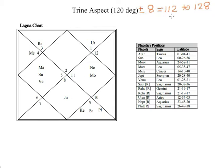Now let's see this with an example. Mercury is at 14 degrees and Jupiter is at 20 degrees. Let's see whether Mercury and Jupiter are in trine aspect or not. Mercury is at 14 degrees Cancer.